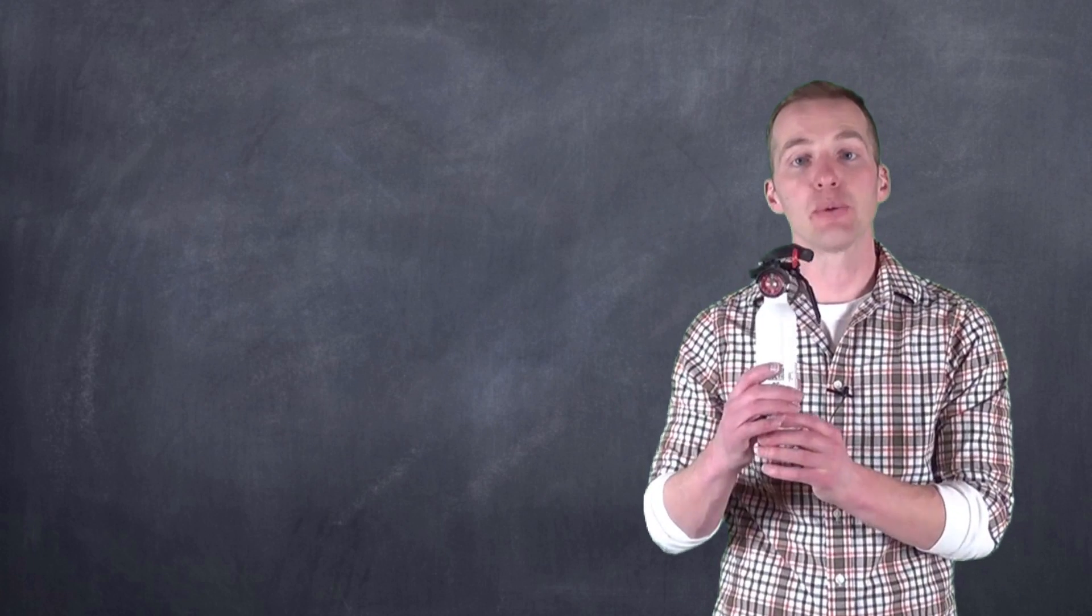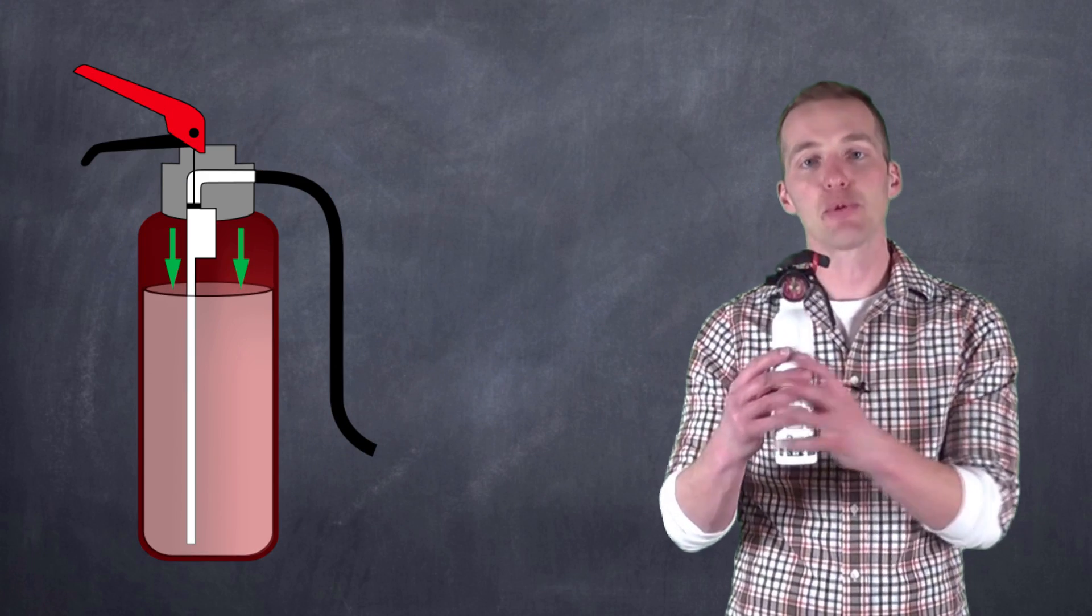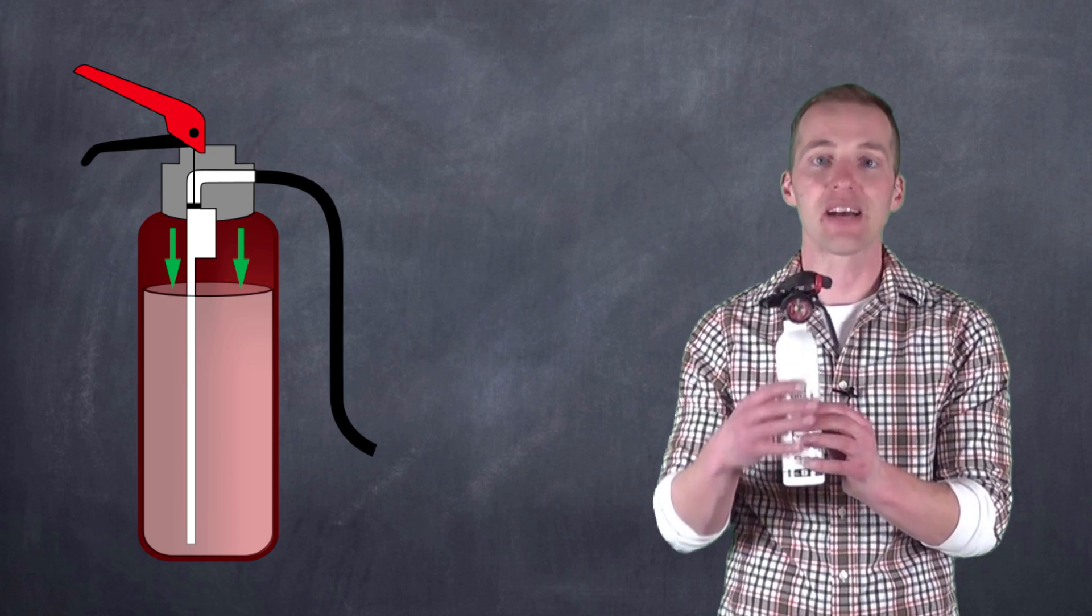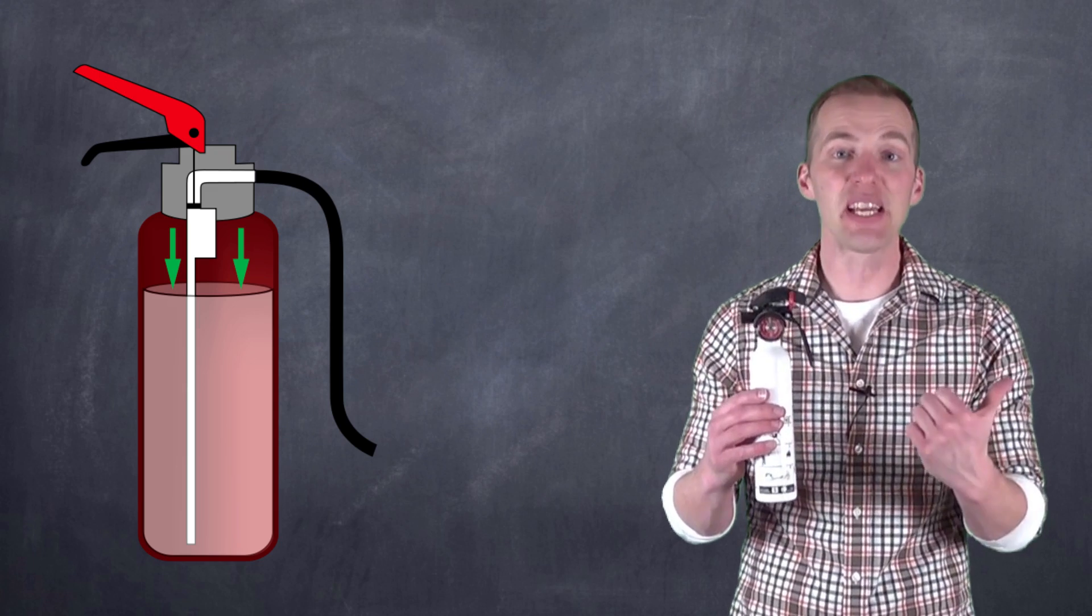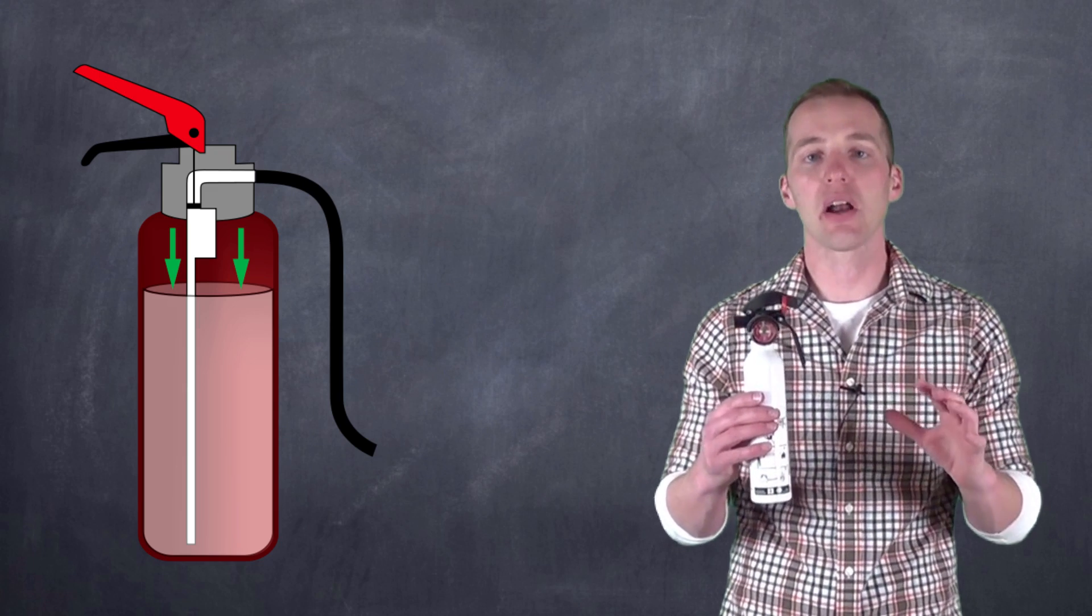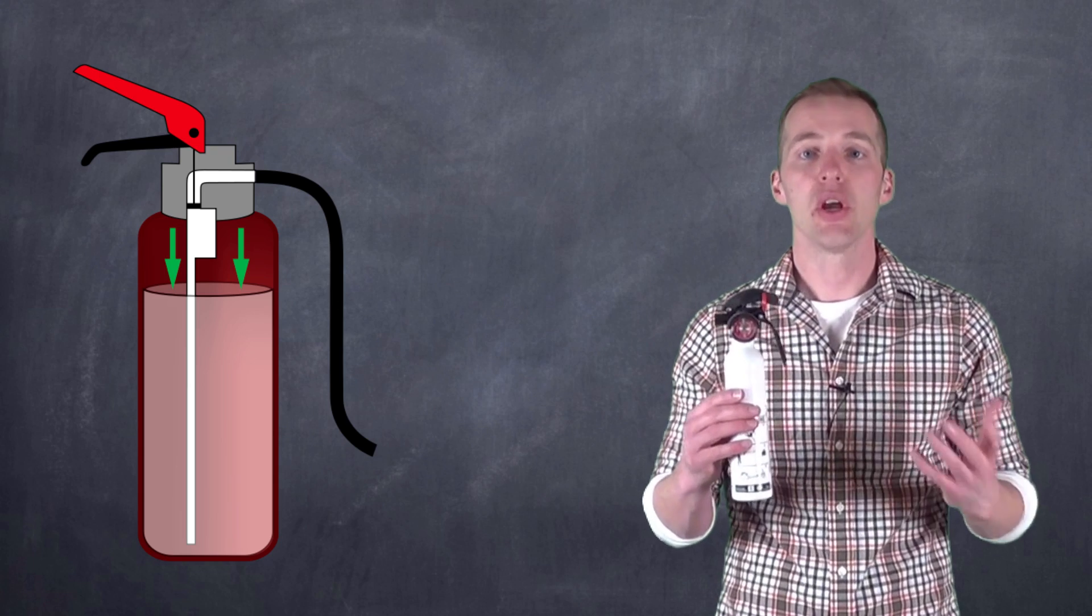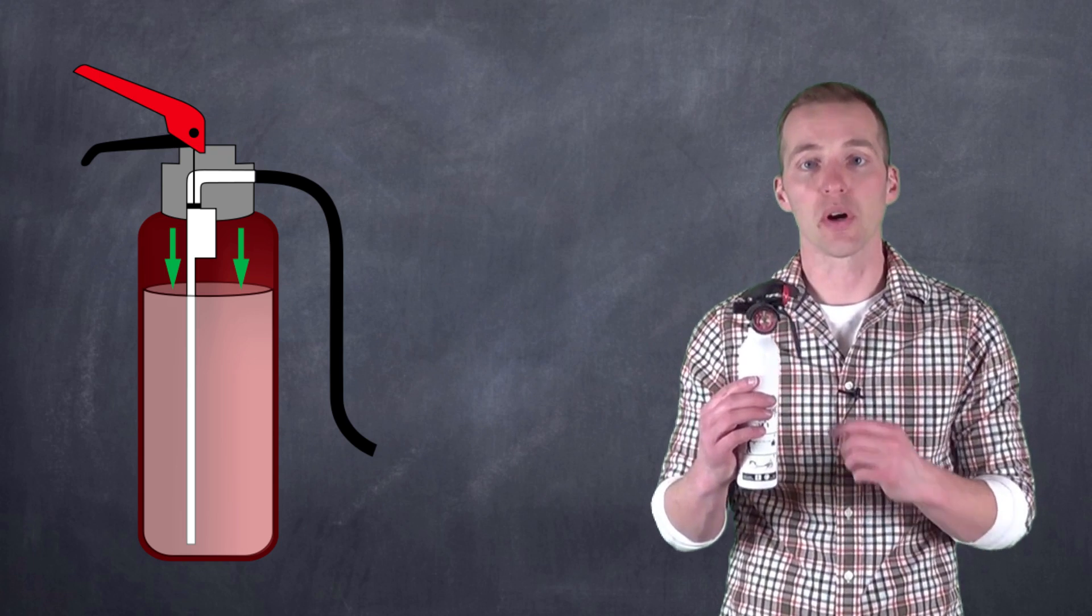The way that a fire extinguisher works is that within it is a compressed gas. And sometimes within this compressed gas, we also have some other materials as well that the gas is going to propel onto the fire. But if you think about those things that a fire needs, it needs enough heat, and it needs oxygen. If we can cut off these supplies, that is, we can lower the heat or cut off the supply of oxygen, we can put out the fire. And that's the basic premise by which these fire extinguishers work.